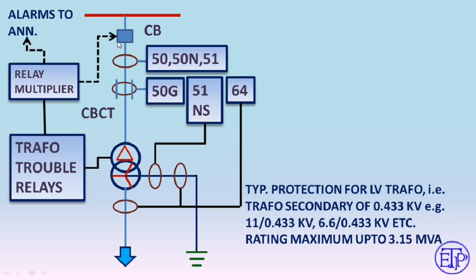There are also transformer trouble relays physically connected with the transformer. Inside the switchgear panel there is a relay multiplier — electromagnetic relays that multiply the contacts — from which trip signals are sent to the circuit breaker and alarm signals to the annunciator. We will now check what the transformer trouble relays are.